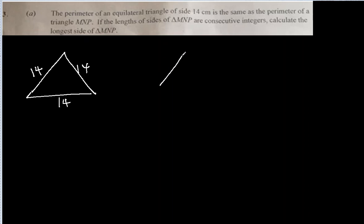Now there is another triangle, let's say this is MNP. And the perimeter of these two triangles are equal. So we know the perimeter of this one, equilateral triangle, will be 14 times 3. 3 times 14 which is 42 cm.